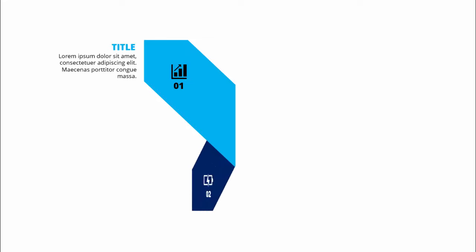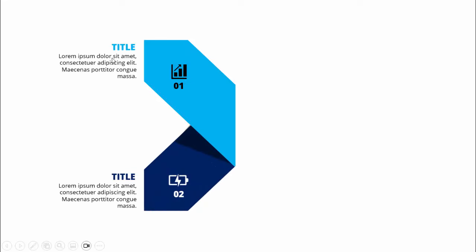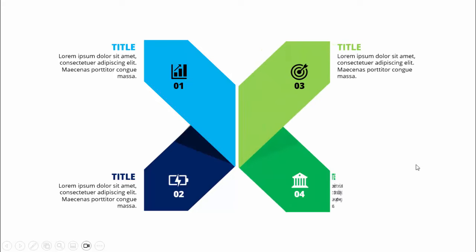In today's tutorial I'm going to show you how to create a four-point infographic slide in PowerPoint. When I click, it will show option one with the icon, then you can add the title and detailed text. Below it will show option two with a different color combination, with a shadow effect added. When I click on the right it will show option three and option four.